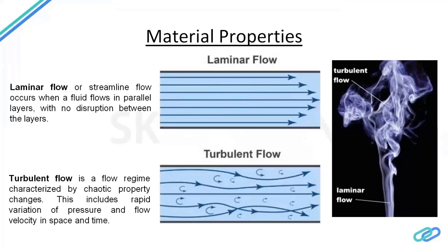Regarding what type of flow it is — laminar or turbulent — if you observe a burning incandescent candle, the flow close to the wick is laminar because the velocity is very low. But as the flow rises due to surrounding air, turbulent flow is visible. This is one of the simplest experiments to visualize the difference between laminar and turbulent flow.